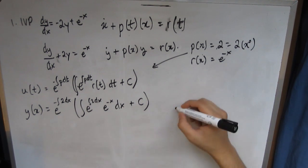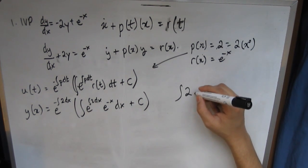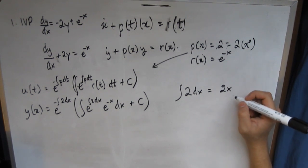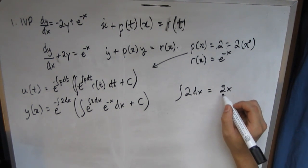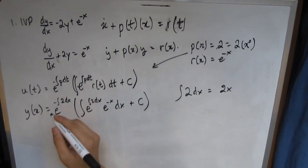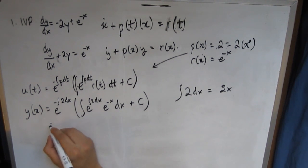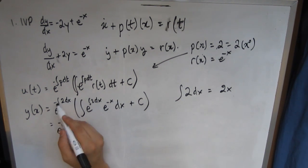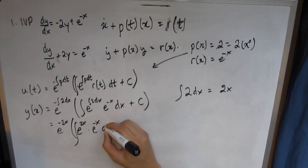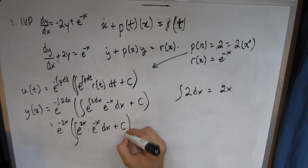Now this is quite an easy integral. Integral of 2 dx, I'm sure all of you know is 2x. If you don't, then you really need to go through your integration. So this would in turn equal e^(-2x) because of that negative sign, multiplied by integral of e^(2x) × e^(-x) dx + c. Now this is very simple. This is just actually multiplying it.